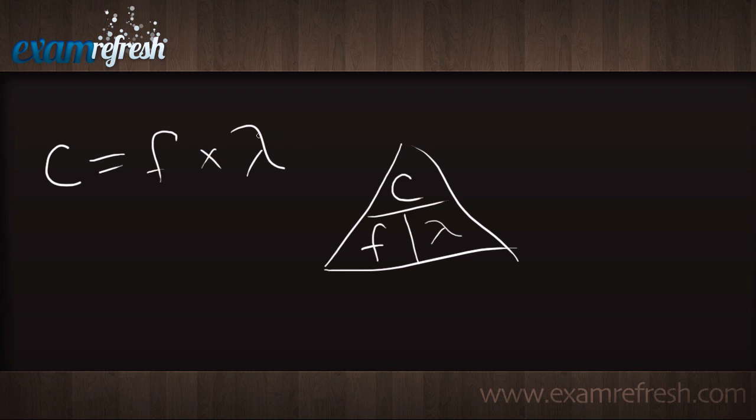But what if we want to switch this formula around and solve for wavelength? If we look, we're going to see that wavelength is the propagation speed over the frequency. This is what our equation will look like: propagation speed over frequency.